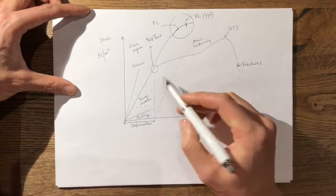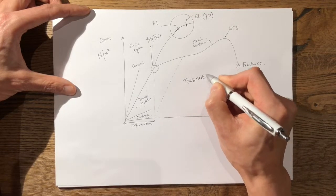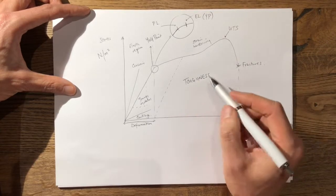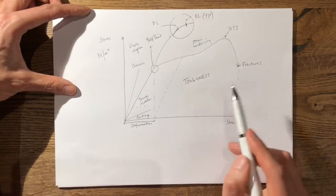Now the area under the curve is known as the toughness of the material and the toughness is the amount of energy the material can absorb before it fails.